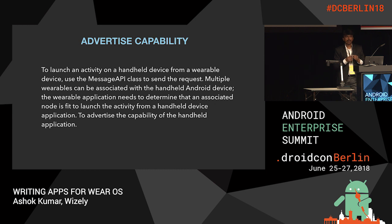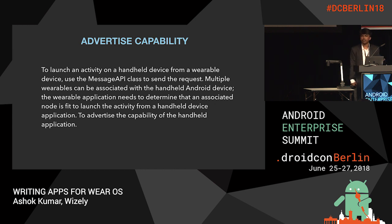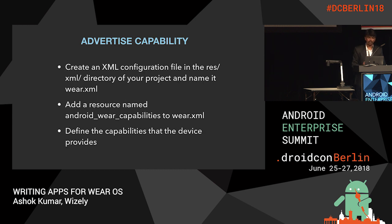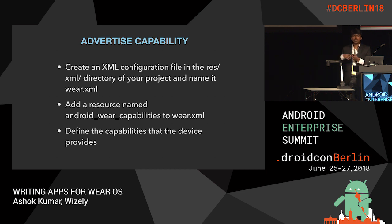To connect a Wear app to a phone, we need to advertise the capability that the Wear has. To launch an activity on a handheld device from a wearable, we use the message API class to send the request. Multiple wearables can be associated with an Android device — Bluetooth speaker, car Bluetooth, and the wearable device. The wearable application needs to determine the associated node is fit to launch the activity and advertise the capability. For example, the watch may have a PPG sensor for pulse rate and a step counter.